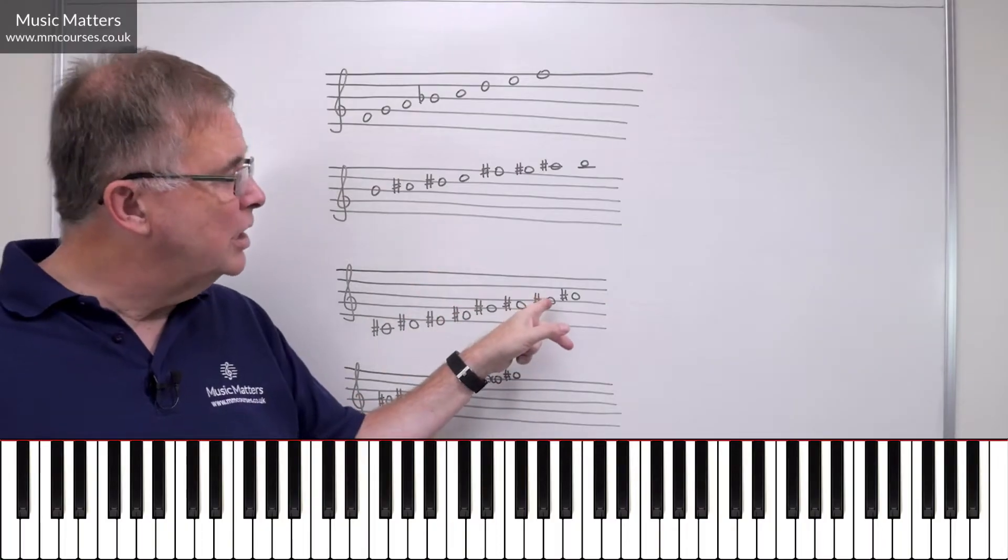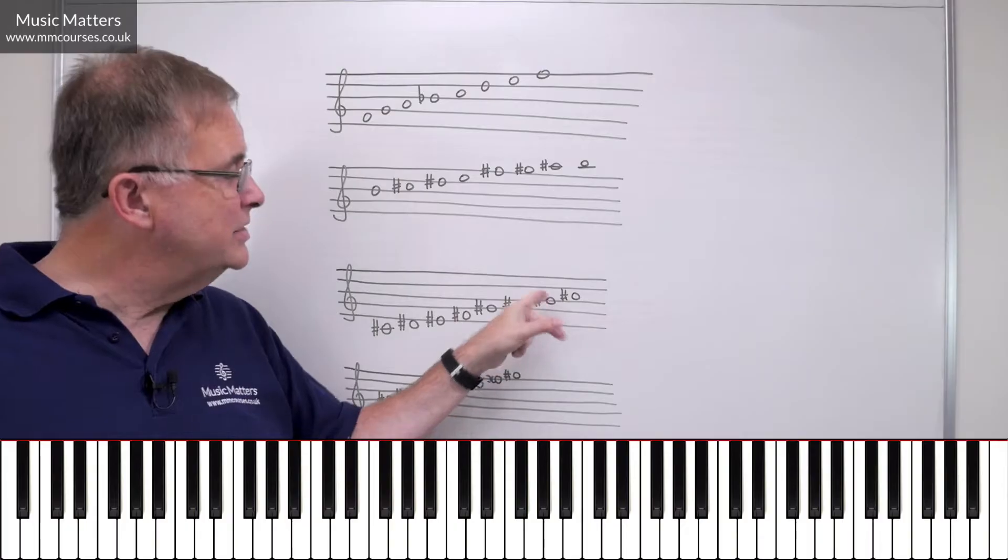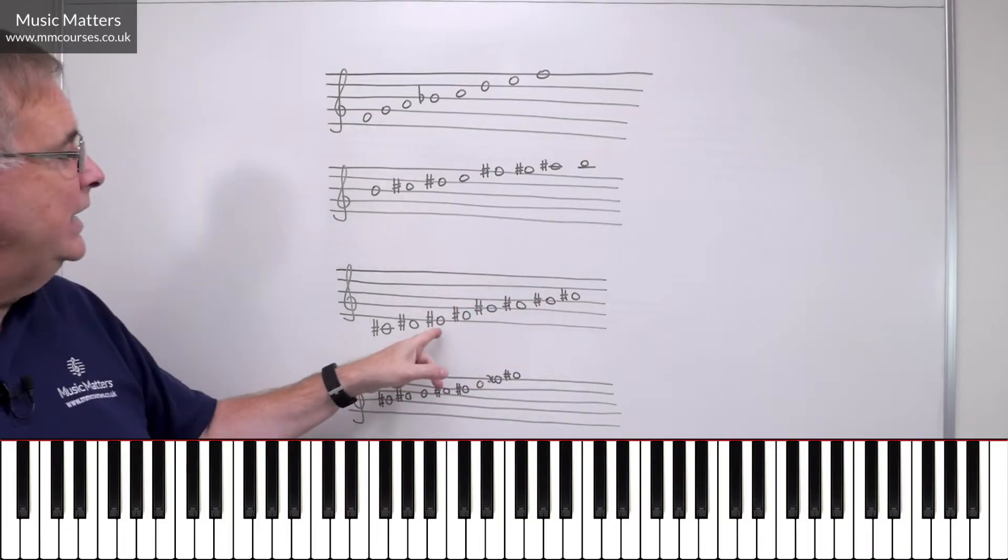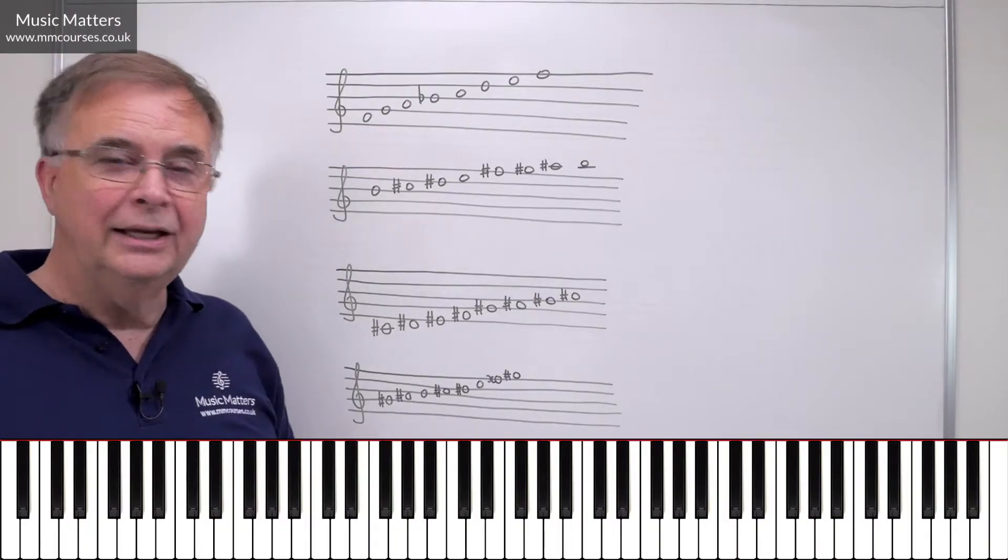I think that's the important thing to recognise. But you can see why B-sharp is an enharmonic equivalent of C, but why it has to be B-sharp in this scale. E-sharp is an enharmonic equivalent of F, but it has to be E-sharp in this scale.